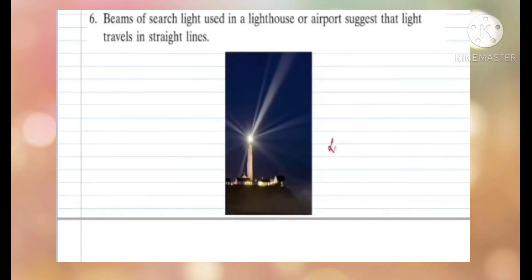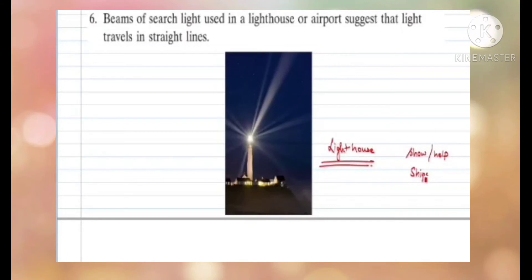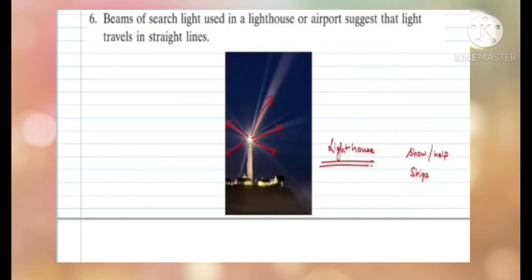If you have seen a lighthouse — it is a mechanism used to help ships at sea find the shore, especially at night, so that ships do not get lost. The lighthouse illuminates and gives out rays. If you observe these rays of light coming out of the lighthouse, they are also straight lines, which shows that light travels in a straight line.